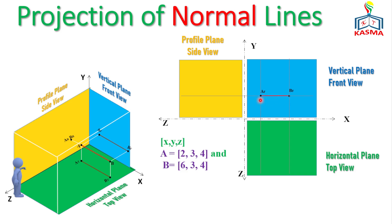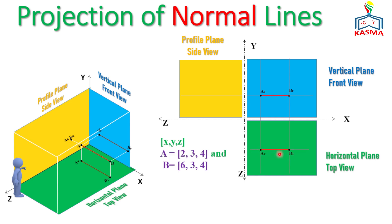For the top view, we use the Z coordinate, which is 4 cm. Construct a horizontal line at 4 cm, and we get both projections of A and B at this line — AT and BT. Connecting them gives the line AT-BT, which is the projection of line AB on the top view. This length from here to here is also a true length.